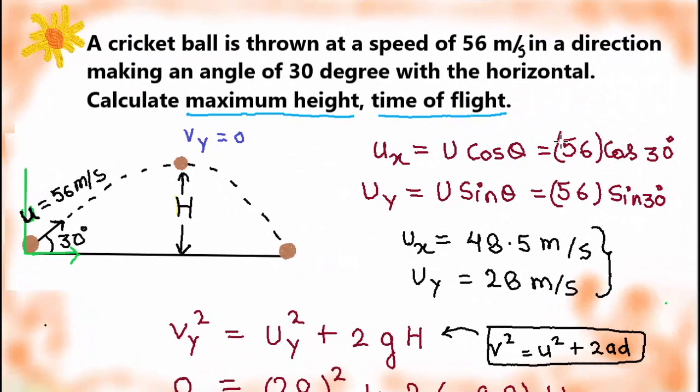Hello friends, in this video we are going to discuss a projectile motion question which is asked by a student. Let's read the question. A cricket ball is thrown at a speed of 56 meter per second in a direction making an angle of 30 degree with the horizontal. Calculate maximum height and time of the flight.